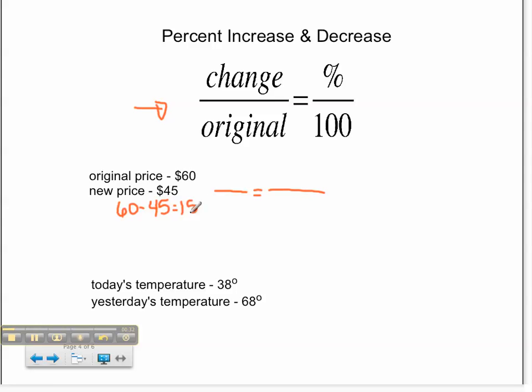60 minus 45 equals 15, therefore my change is 15. My original price is $60. That will go in the bottom of my proportion. That is going to be equal to the percent over 100.